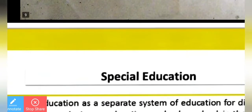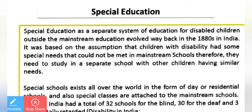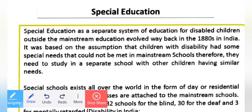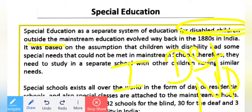The main importance of inclusive education is equality and providing a better future. What is special education? Special education is a separate system of education for disabled children, outside of mainstream education. Mainstream education includes both disabled and non-disabled children studied together.